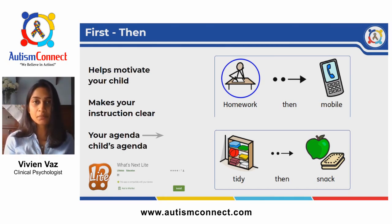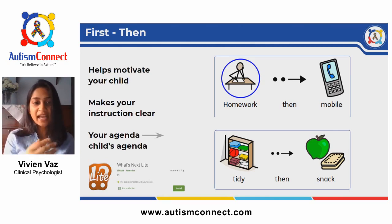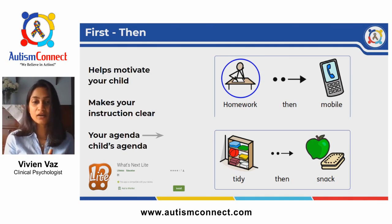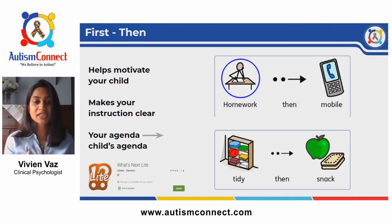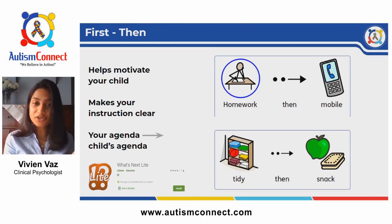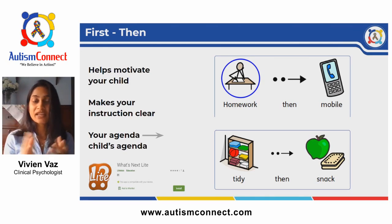The first activity is shown using a picture or object of what you would like your child to do, and the second activity is shown using a picture or object of something your child would like to do. For example, if your child likes playing games on the phone and you want them to finish their homework, show them the first-and-then board and say 'first finish your homework, then play games on the phone,' while pointing to the visuals. Similarly, if you want your child to tidy up toys before tea time, show pictures of tidying up and their favorite tea time snack.